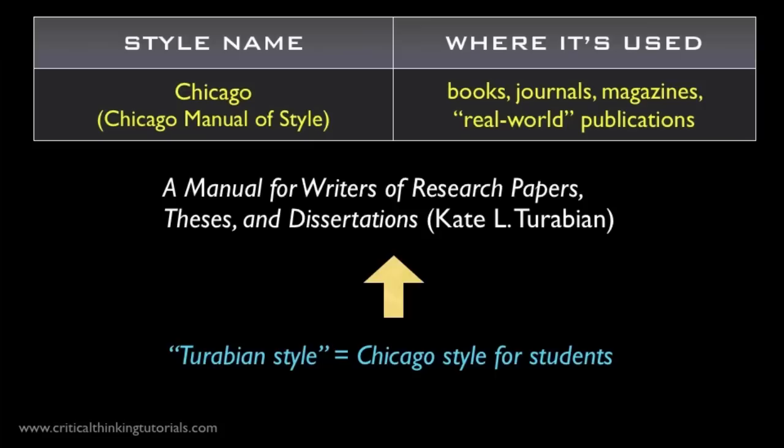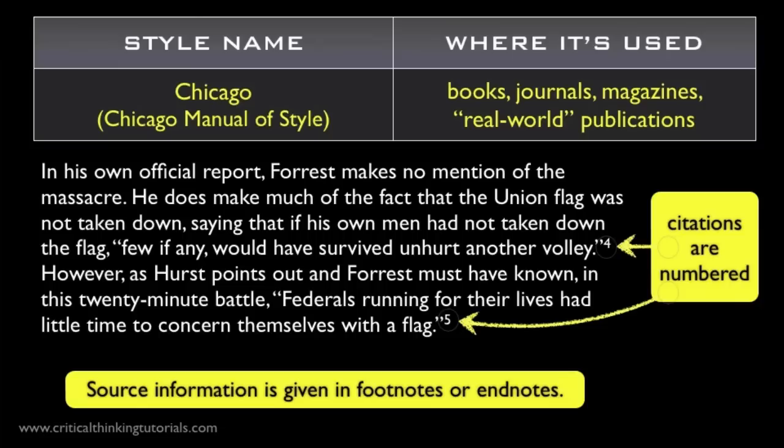What's distinctive about the Chicago style is that it supports two different reference styles, and supports the mixing of those styles in the same publication. When most writers hear the term Chicago style, they think of a sequential numbering, notes-based citation system. The citations are numbered, and then the source information is given either in a footnote at the bottom of the page or an endnote at the end of the document. With this system, you can avoid having a separate bibliography section altogether.